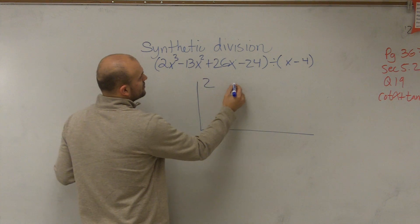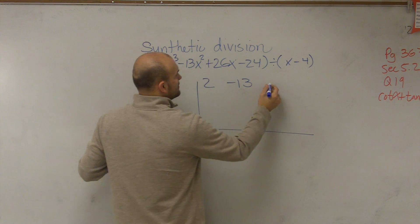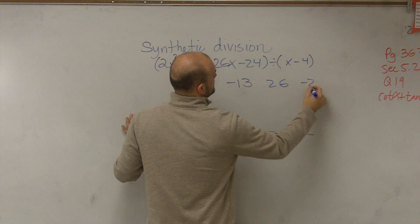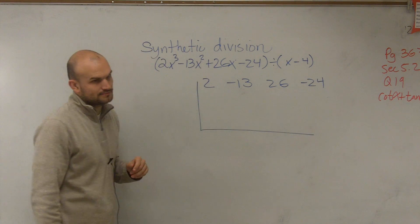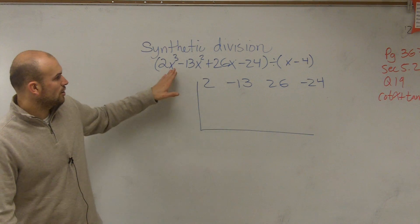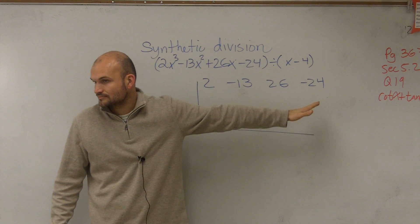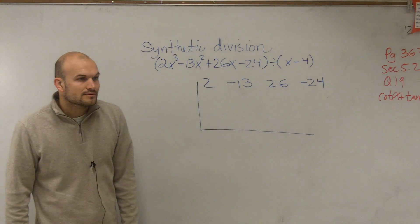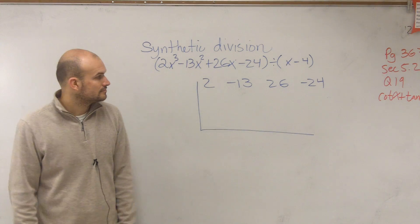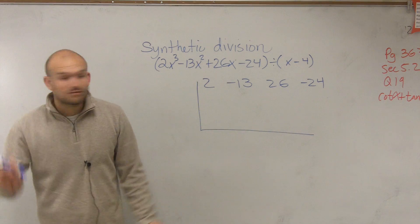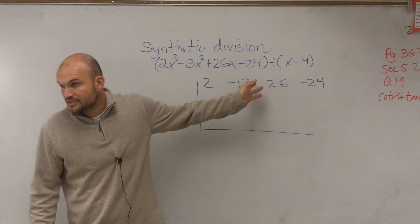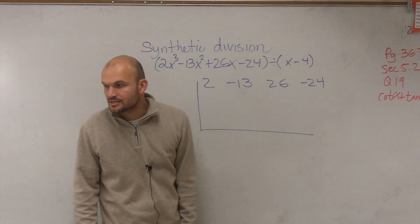So therefore, I have 2, negative 13, 26, and negative 24. So you just take the coefficient of each term and you write them inside the box. Now, negative 24 is a constant, you're right, it's not a coefficient, it's a constant, but you're going to include the constant as well.